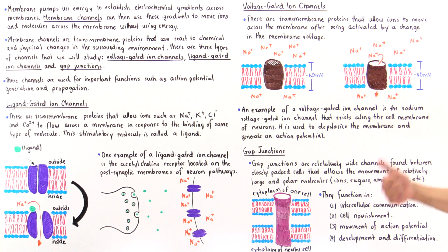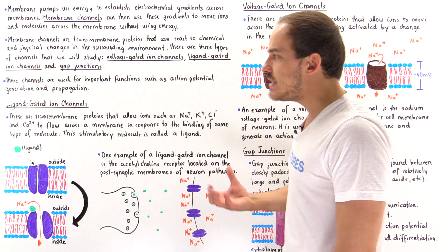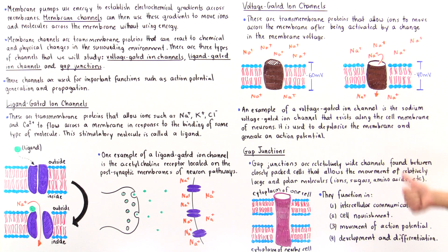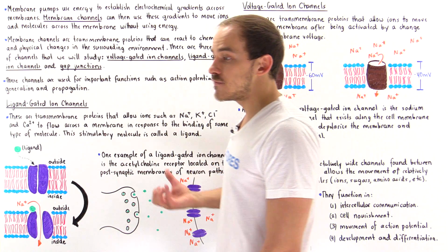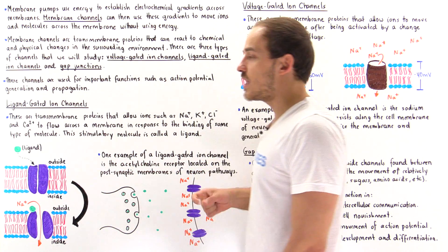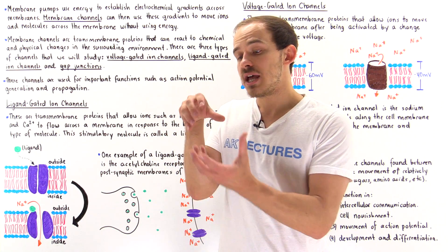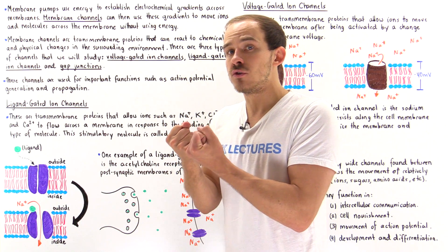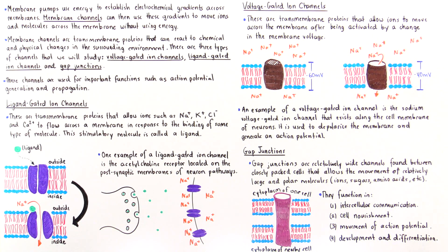There are four important functions of gap junctions. First, intercellular communication. Second, cell nourishment — cells not found in close proximity to capillaries receive glucose and amino acids through gap junctions. Third, movement of action potentials — for example, cardiac muscle cells use gap junctions to propagate action potentials across the entire heart, creating a continuous and forceful contraction that moves blood through the cardiovascular system. Fourth, gap junctions are also involved in development and differentiation.